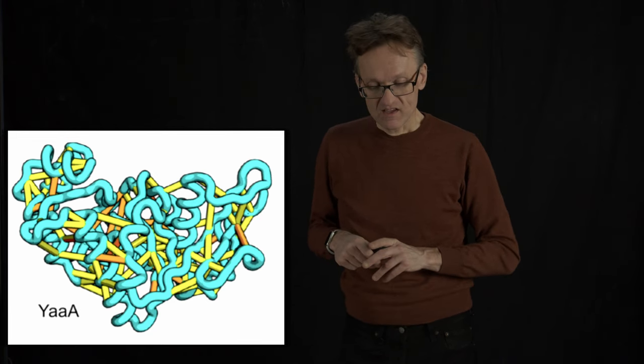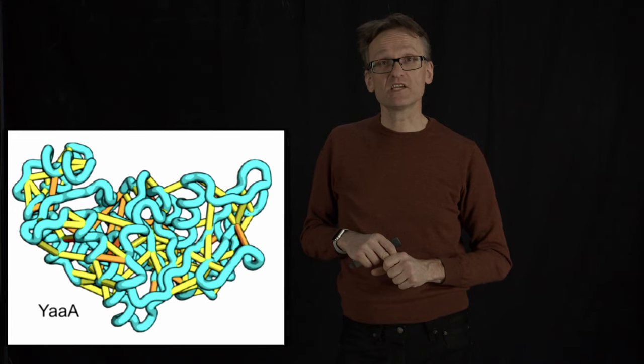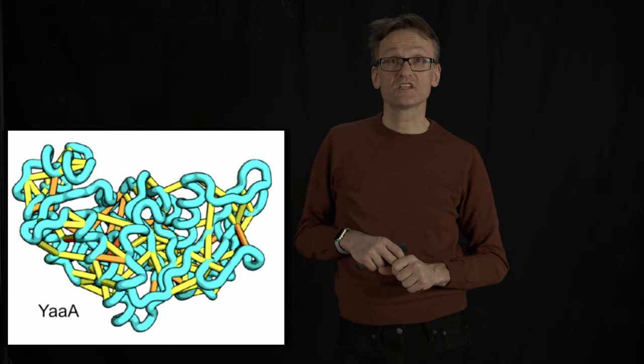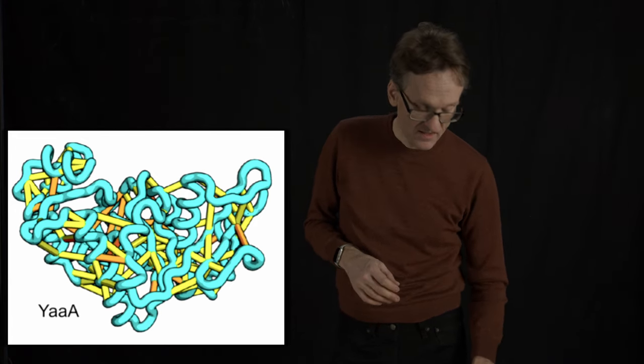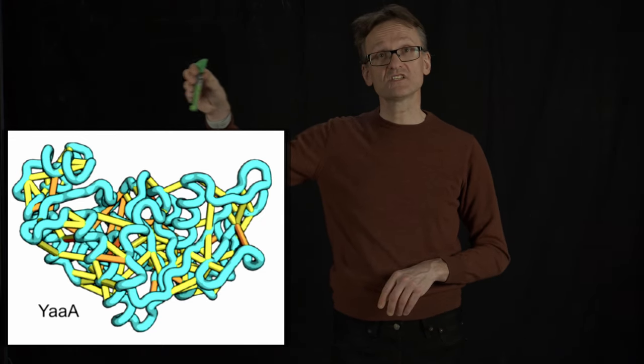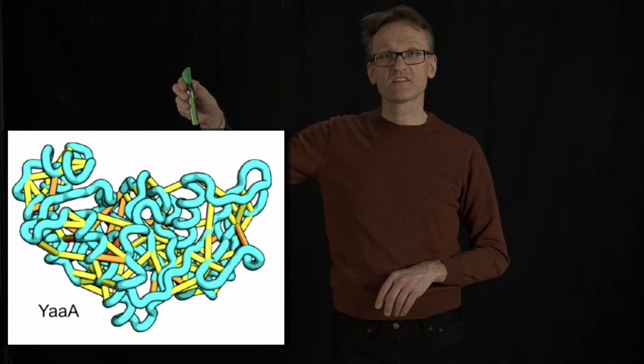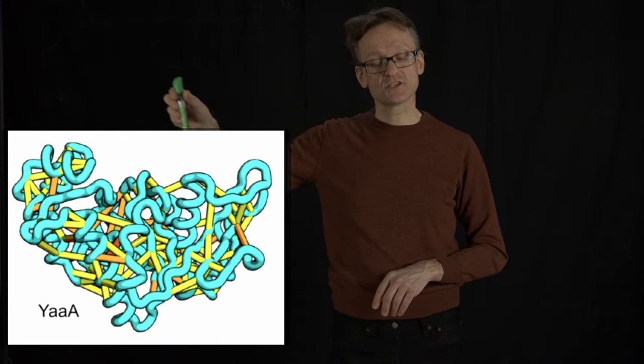But Deborah Marks and Chris Sander came up with a beautiful way of solving an old problem. And this old problem is the following: that if I have a sequence here, this sequence is going to have lots of residues in spatial proximity. And the idea here is that if I have two residues that are neighbors in space, if one of those residues change, it's likely that the other one will change too.